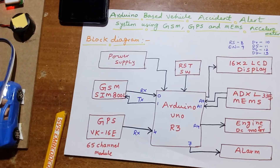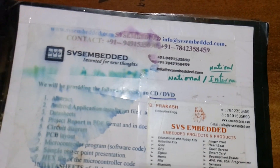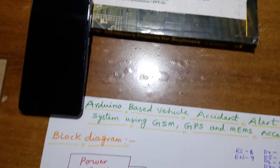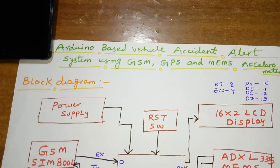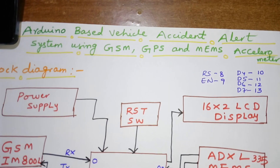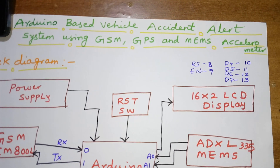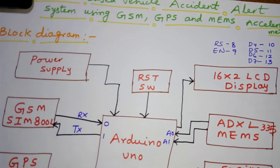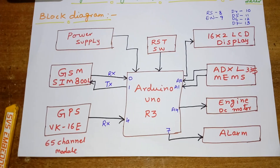Hi, we are from SVS Embedded. The project title is Arduino-based vehicle accident alert system using GSM, GPS, and MEMS accelerometer.